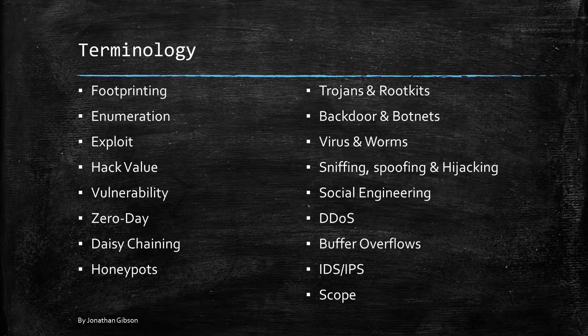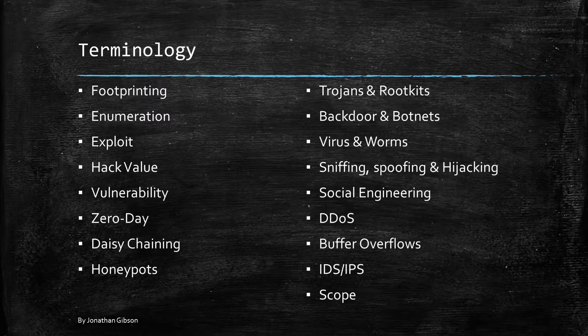Some terminology that you should know and will be on the test. Footprinting is the first and most convenient way that hackers use to gather information about their target. The purpose of footprinting is to learn as much as they can about a network or a computer to figure out the security implementations and how to bypass them.